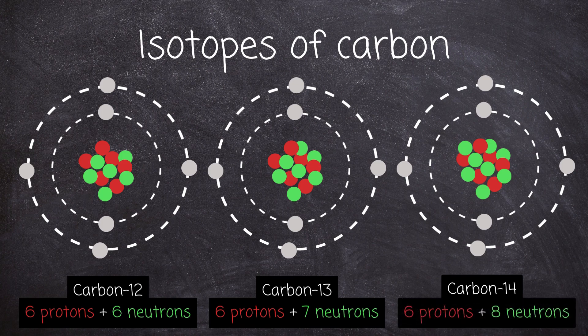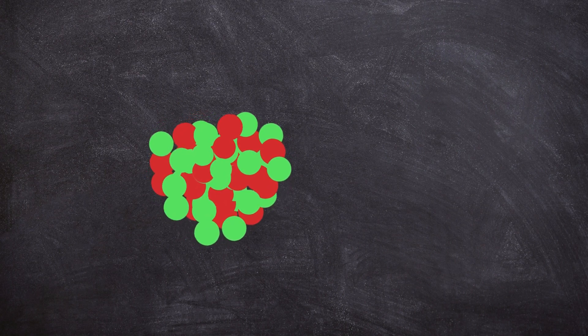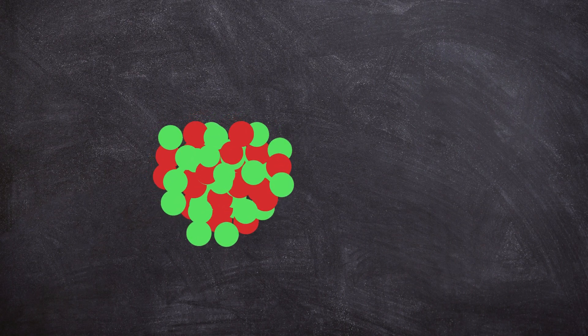That's right, it has six protons and eight neutrons. Certain isotopes are unstable and give off radiation. Radioactive isotopes release an unstable type of energy called radioactive decay.